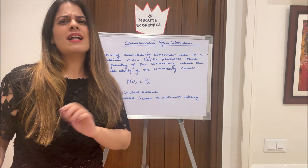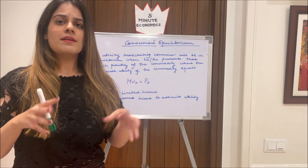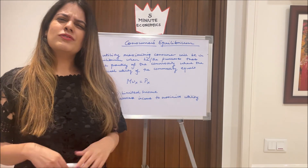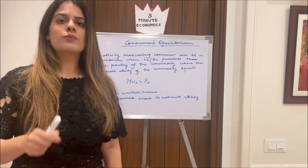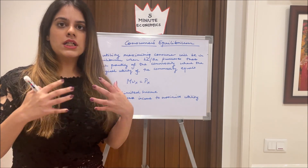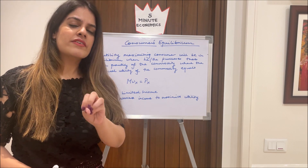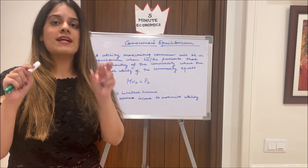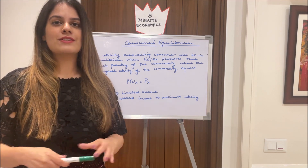The banter continues — you say six hundred, he says nine hundred — until he says, 'Okay, seven fifty.' You feel that's reasonable, close enough to five hundred and not as high as a thousand, so you both agree at seven fifty and you buy the t-shirt. That point — where you actually make the purchase — is the point of consumer's equilibrium.